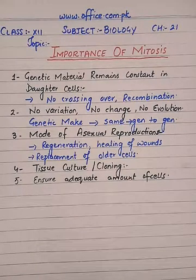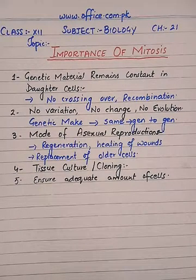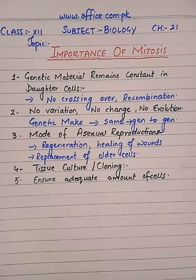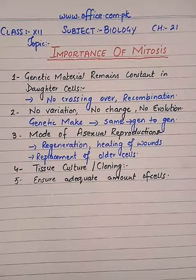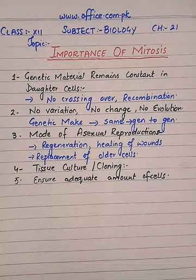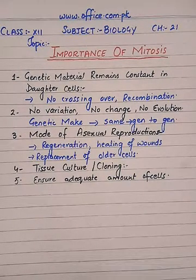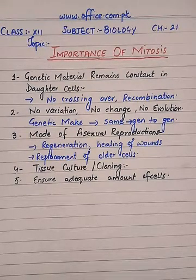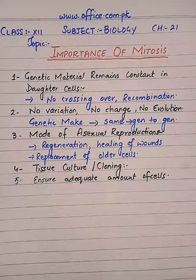All 20,000 cells should be mature enough to increase the height by one inch. If that does not happen, the cells that are formed will be immature, they will be rapidly dividing, and they will result in cancer situations. So this was all about the importance of mitosis. In the next video we will discuss about cancer, which is nothing but uncontrolled cell division. Till then, take care of yourself and keep studying.